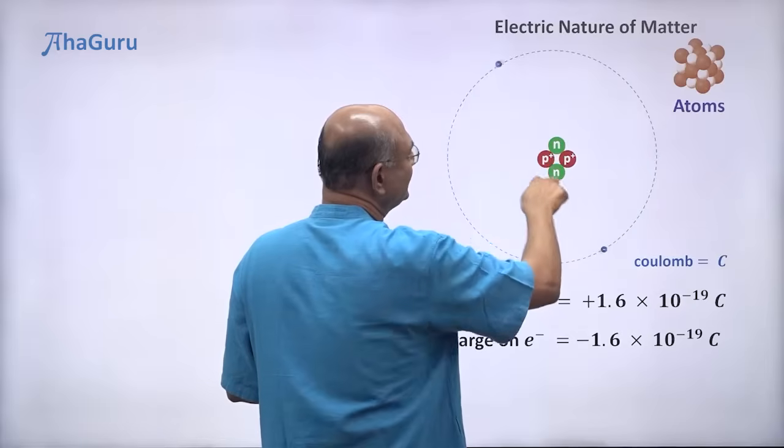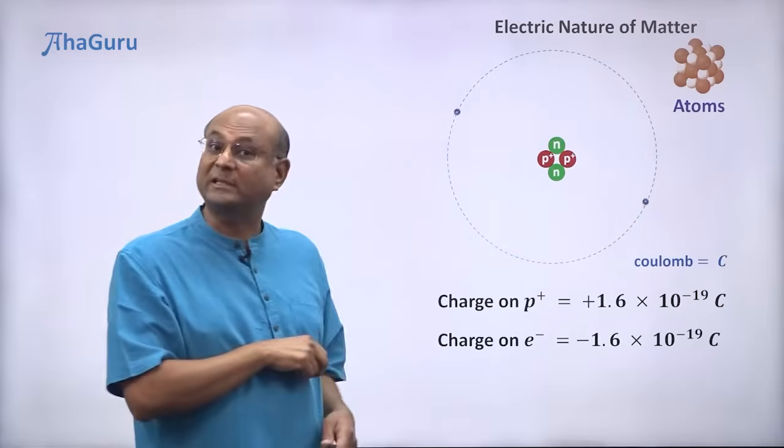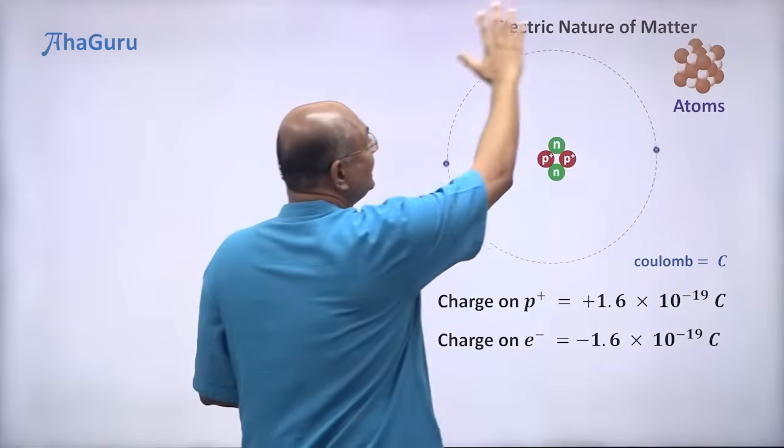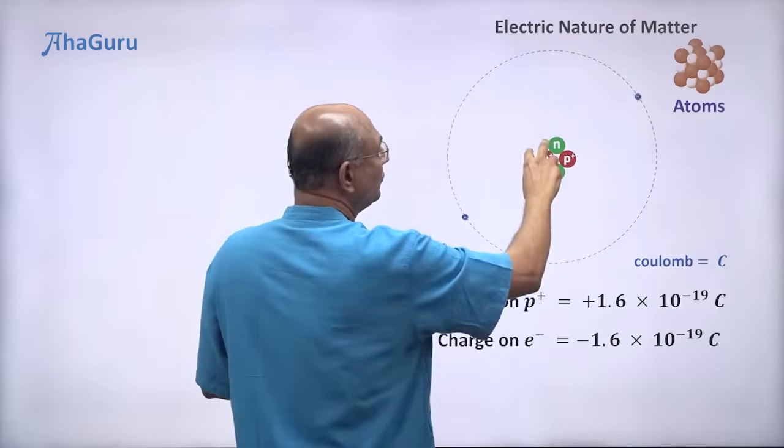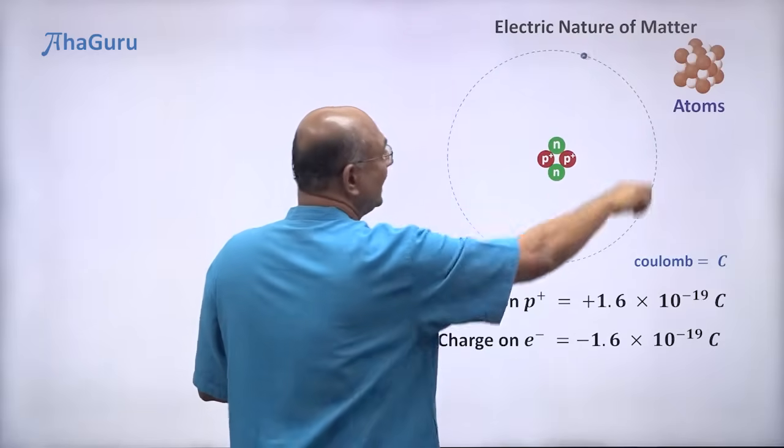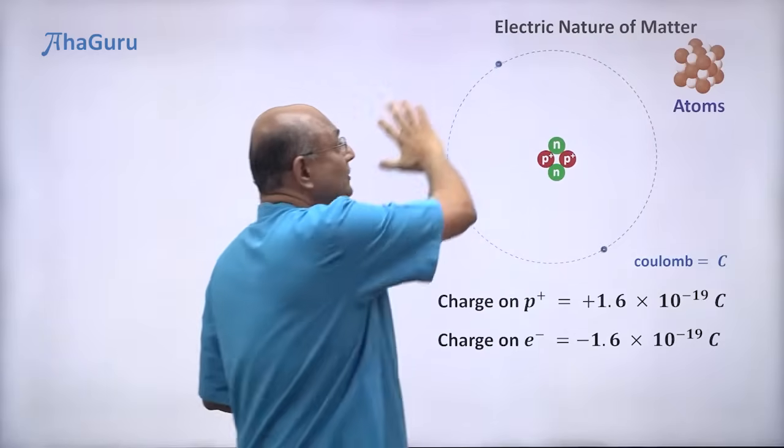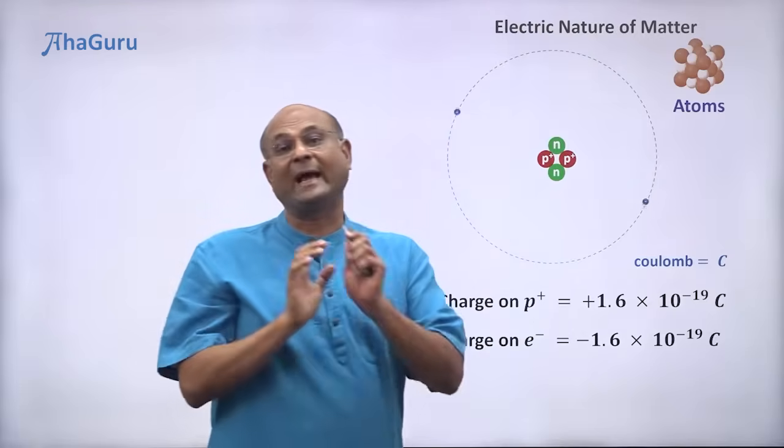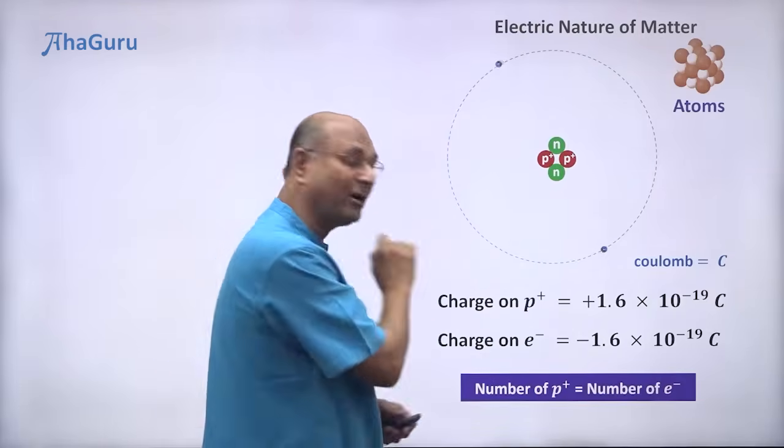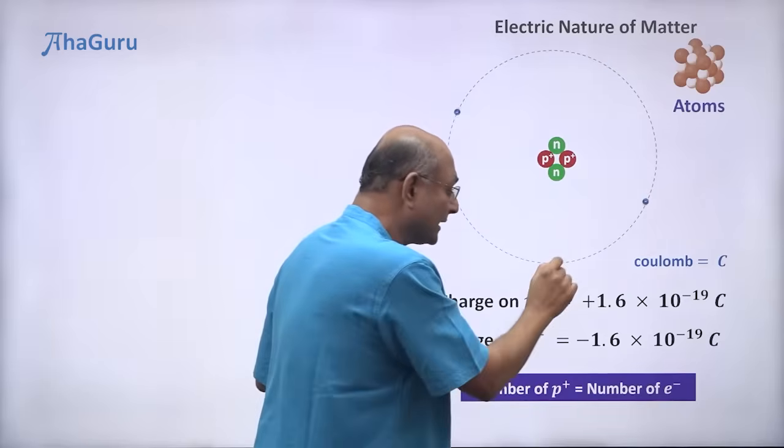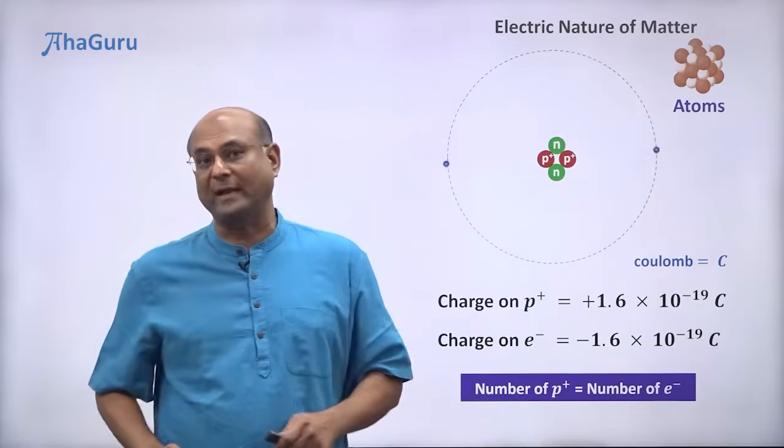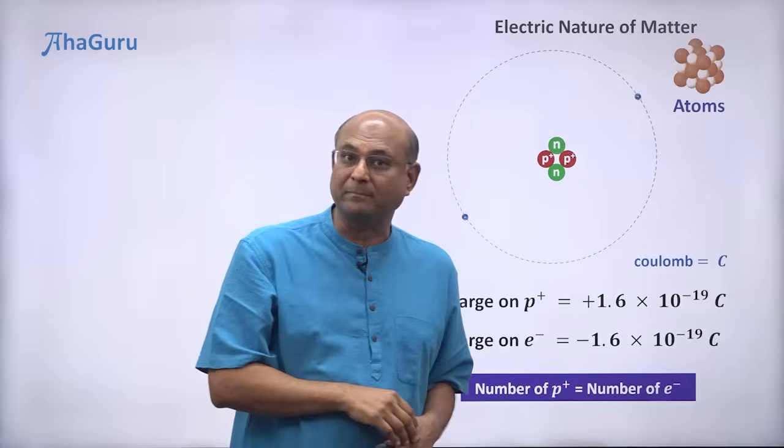Now, if you look at just the nucleus, it has a positive charge. But if you take the atom as a whole, you have two positive charges here and you have two negative charges. So the net effect is that the atom has zero charge because the number of protons is always equal to the number of electrons in a neutral atom.